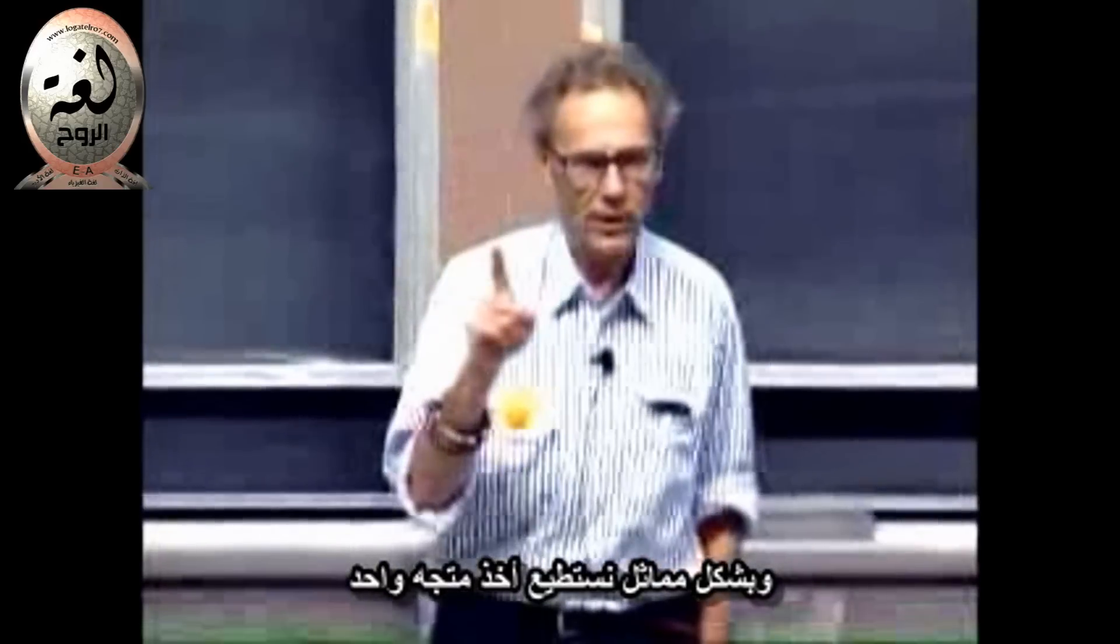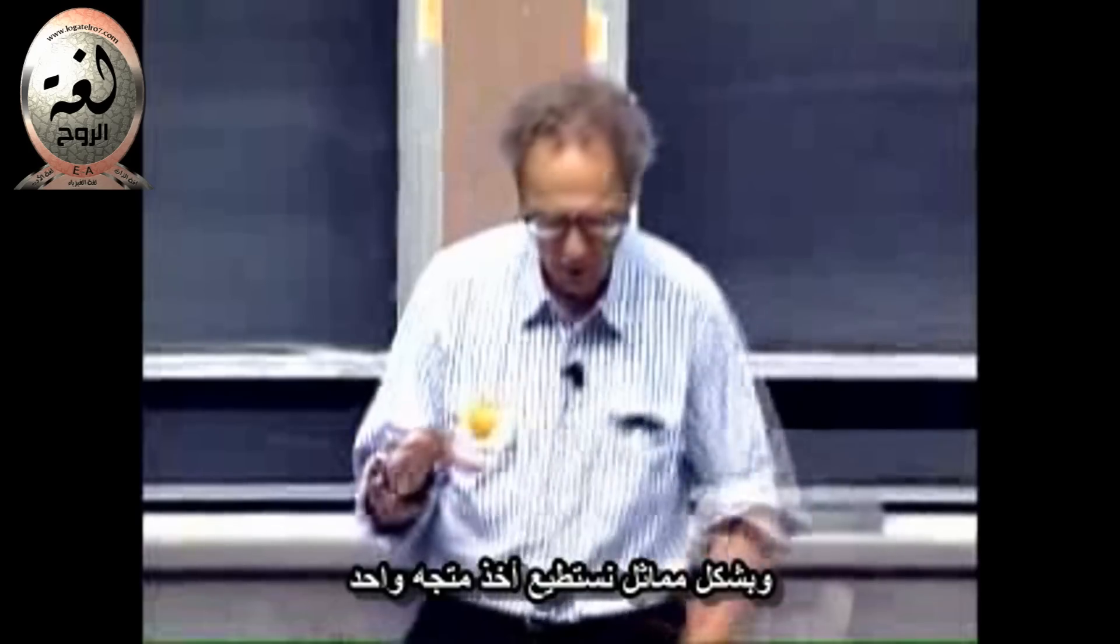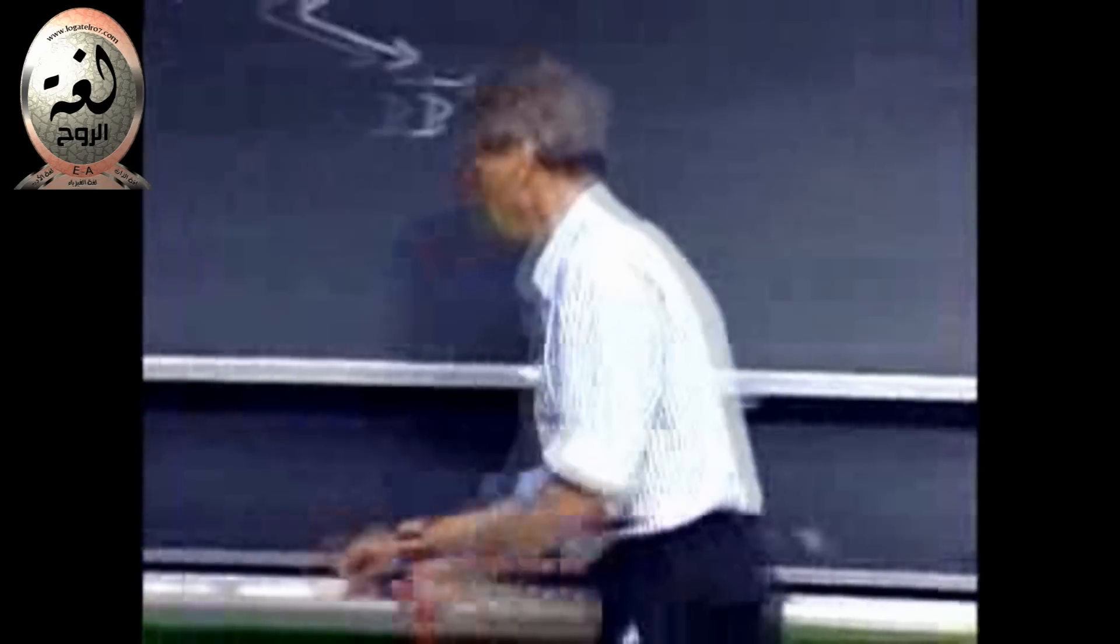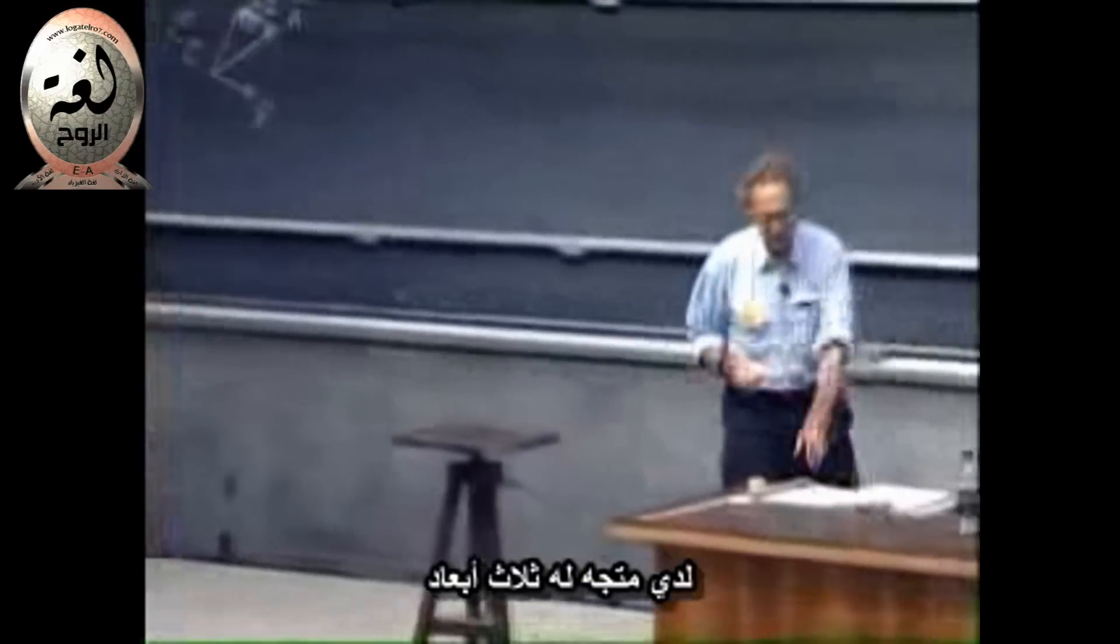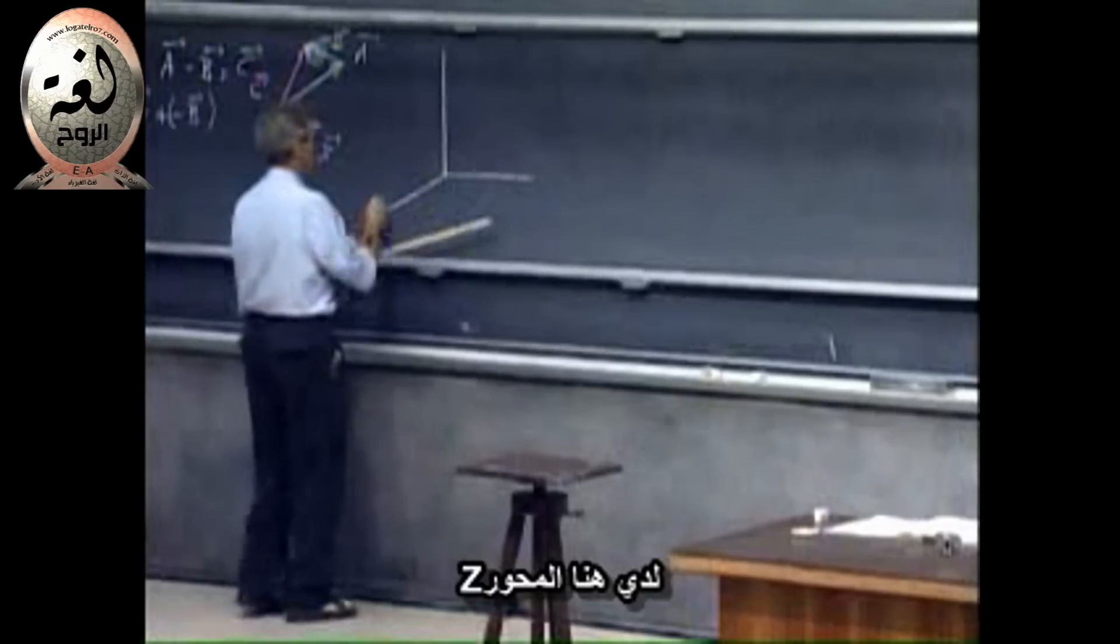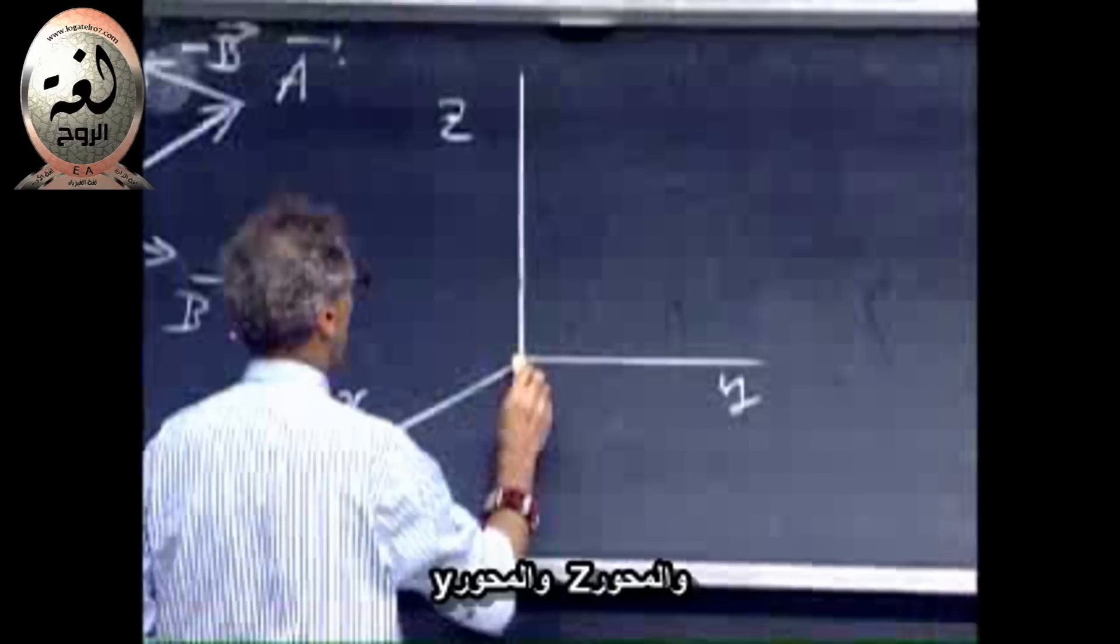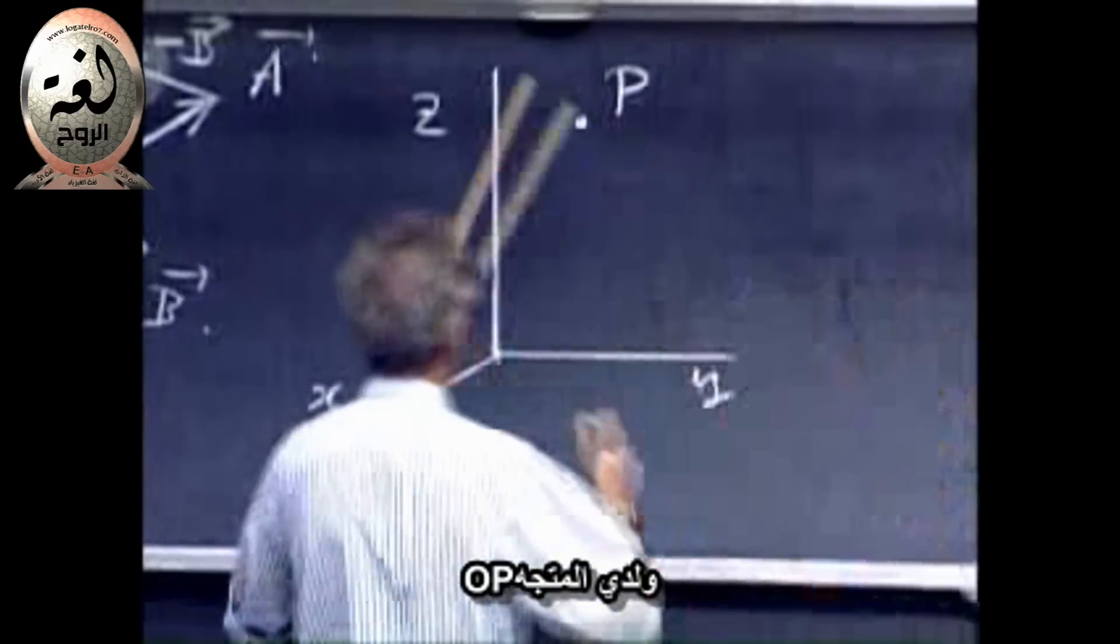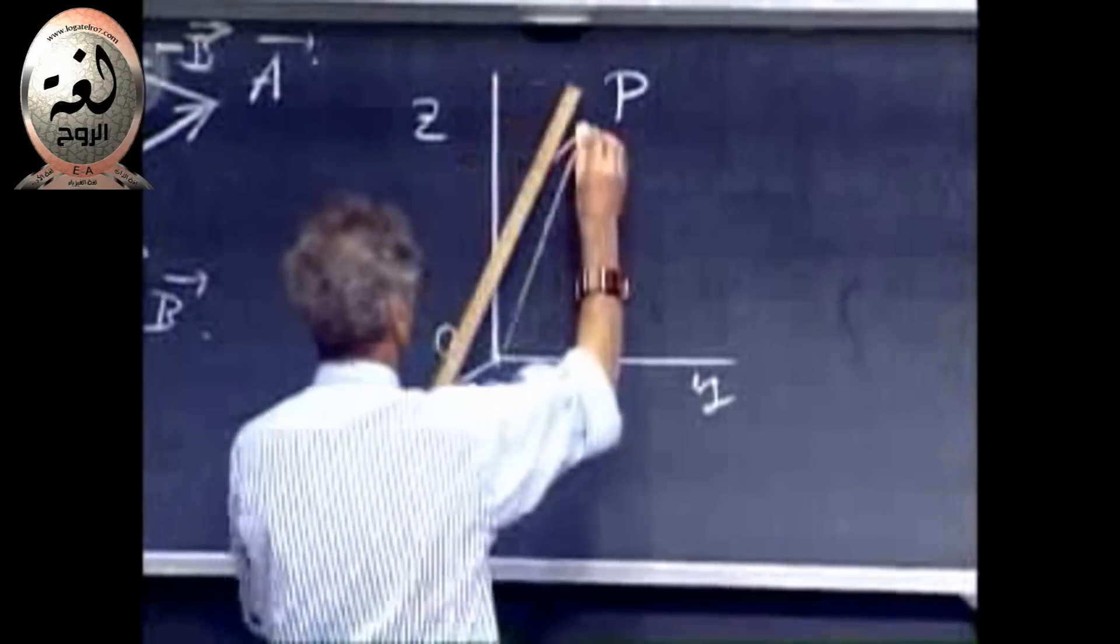As we have seen that the sum of vectors can be represented by one vector, equally can we take one vector and replace it by the sum of others, and we call that decomposition of a vector. And that's going to be very important in 8.01, and I want you to follow this quite closely. I have a vector which is in three-dimensional space. This is my z-axis, this is my x-axis, y-axis, and z-axis. This is the origin O, and here is a point P, and I have a vector OP.